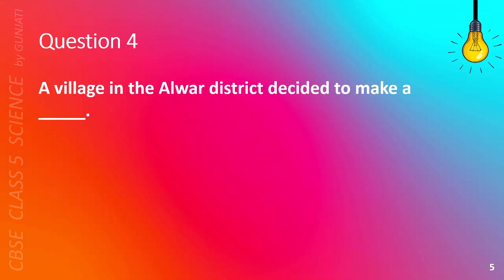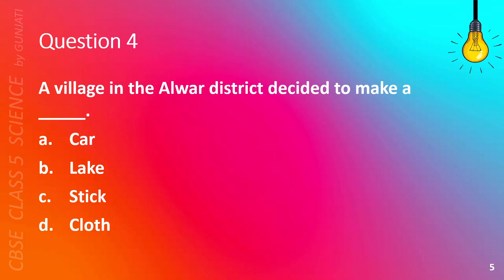Question 4. A village in the Oliver District decided to make a blank. A. Car, B. Lake, C. Stick, or D. Cloth. The correct answer is B. Lake.